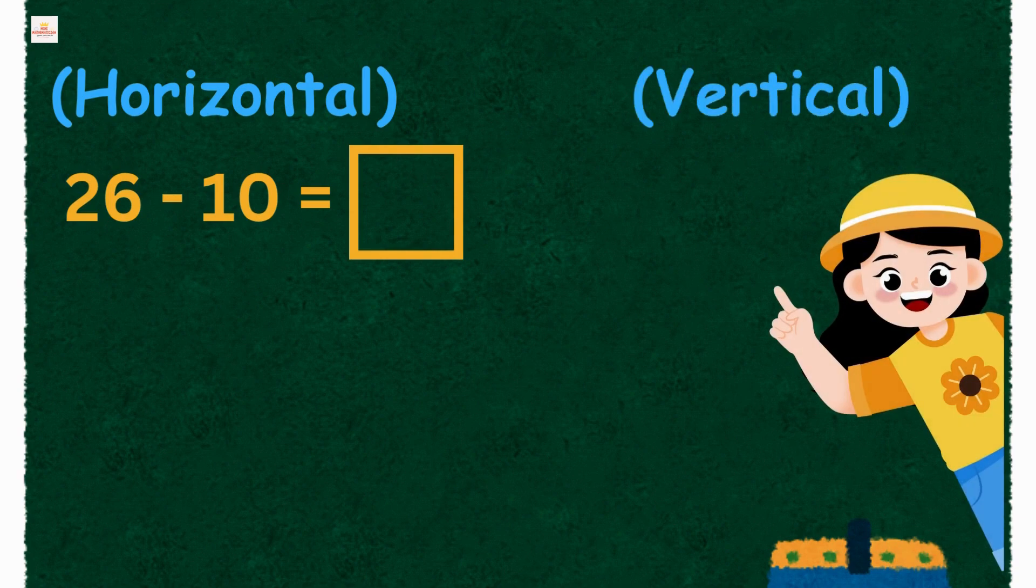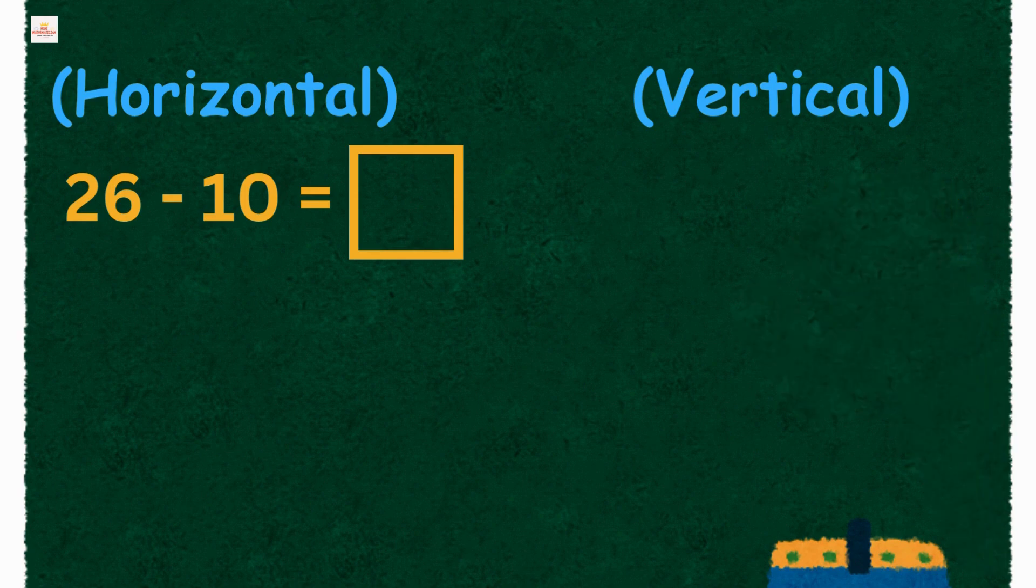Now let's write the same fact in vertical form. Because it's a two-digit subtraction, we will write the place values: tens and ones.